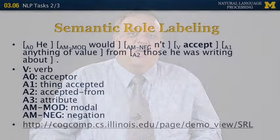The next NLP task is semantic role labeling. Verbs have arguments, some required and some not, and those arguments can appear in many different orders. The verb accept has multiple arguments: A0 is the acceptor (the person doing the accepting), A1 is the accepted thing, A2 is from whom it was accepted, A3 is an attribute, and there can be additional modifiers for modality and negation. The goal is to identify the main verb and connect the surrounding words to each argument.